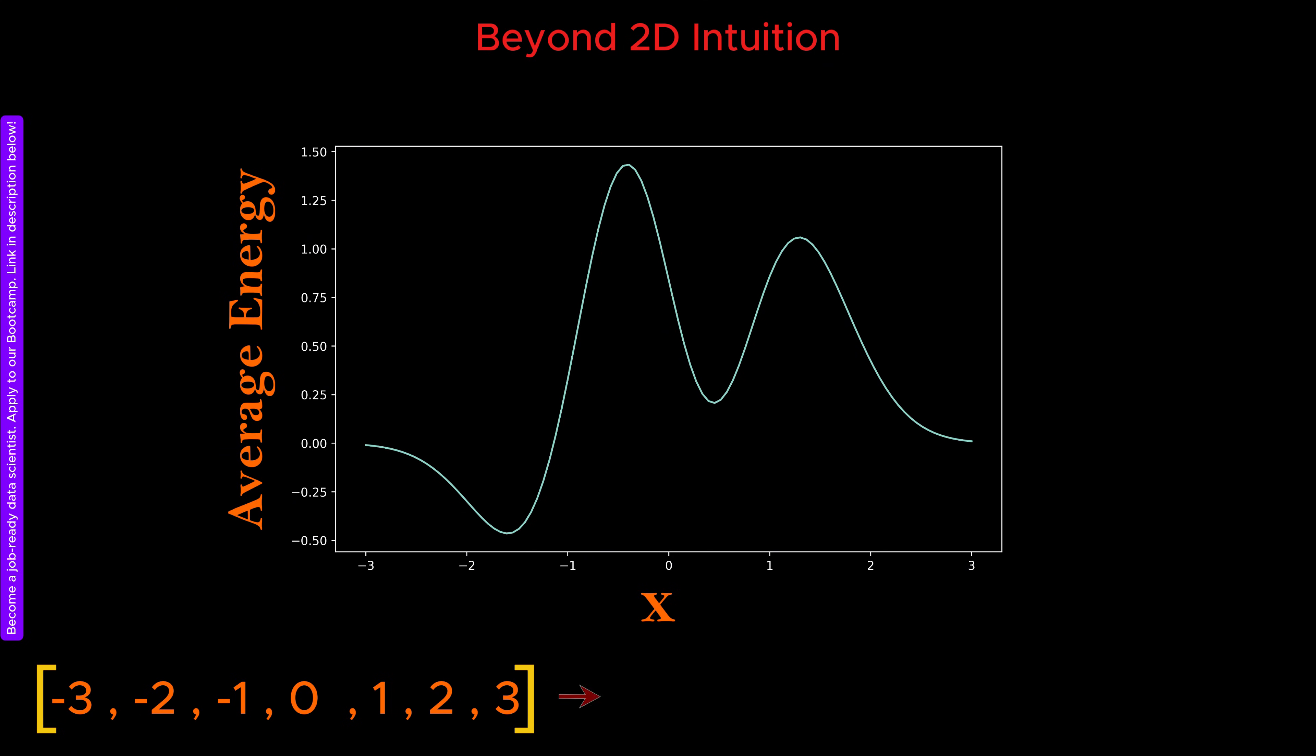Then, for each x value in that list, we compute the corresponding value of the function and store it in another list of the same size. Finally, for each pair of x and function values, we place a marker on the canvas at the appropriate location.